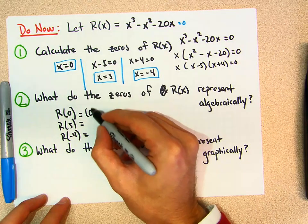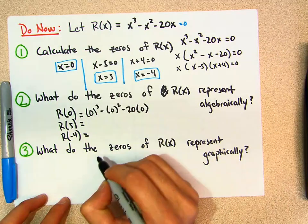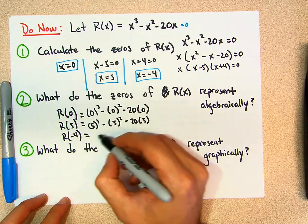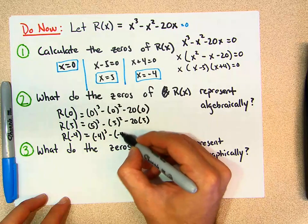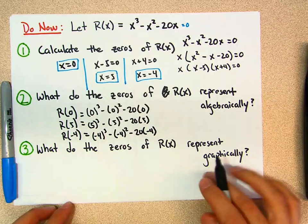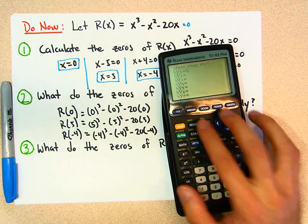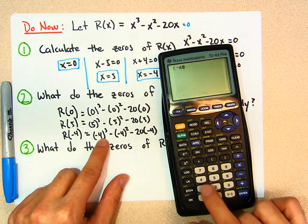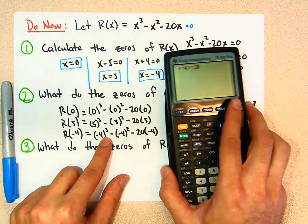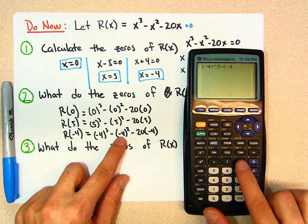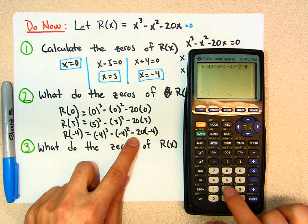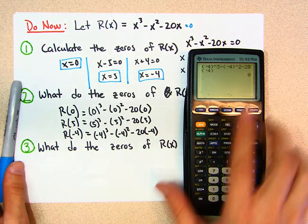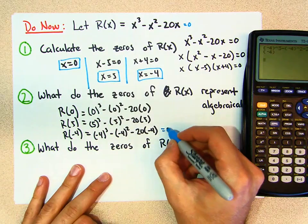So let's take a look. What is zero cubed minus zero squared minus 20 times zero? What is five cubed minus five squared minus 20 times five? And what about negative four cubed minus negative four squared minus 20 times negative four? If I put any one of these into my calculator I better get zero. Be very careful when you put in parentheses. Let's do the difficult one: parentheses negative four, close, cubed, minus parentheses negative four, close, squared, minus 20 times parentheses negative four, close. Enter — I get zero. It's zero for all three of them.